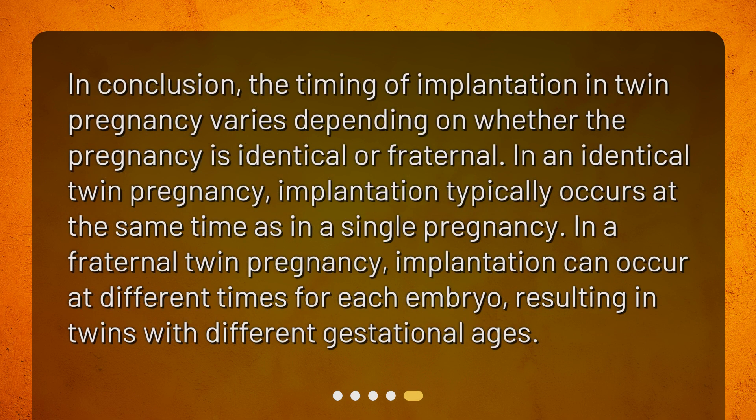In conclusion, the timing of implantation in twin pregnancy varies depending on whether the pregnancy is identical or fraternal. In an identical twin pregnancy, implantation typically occurs at the same time as in a single pregnancy. In a fraternal twin pregnancy, implantation can occur at different times for each embryo, resulting in twins with different gestational ages.